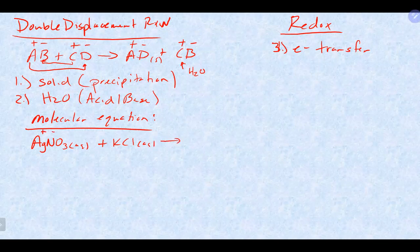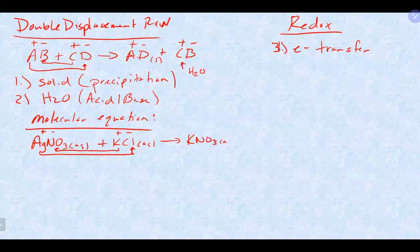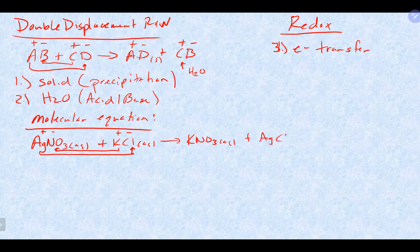That gives us KNO3 and silver chloride, which would be a solid based on solubility rules. When we put it together in a beaker, things that are strong electrolytes break apart completely in solution, weak electrolytes stay together, and solids and liquids stay together.